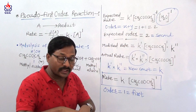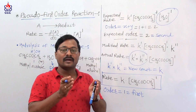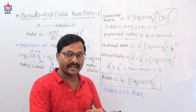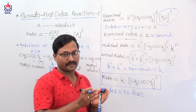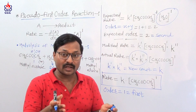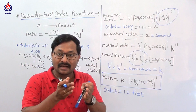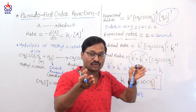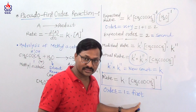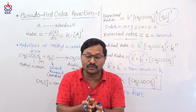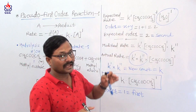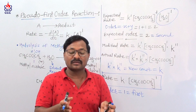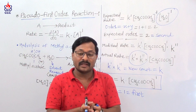But actually it is a first-order reaction, and these types of reactions are called pseudo first-order reactions. Pseudo means false or fake. Theoretically the expected order was second or higher order, but when we compare the actual rate law, the order of the reaction is first. Practically the order is lower than expected — and therefore it is called pseudo.